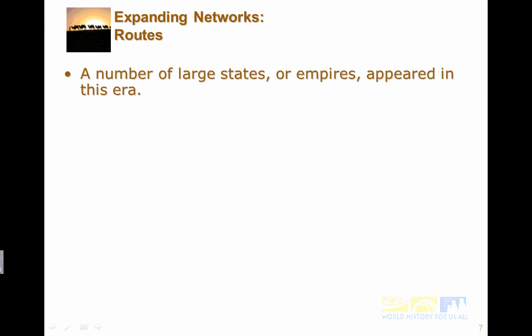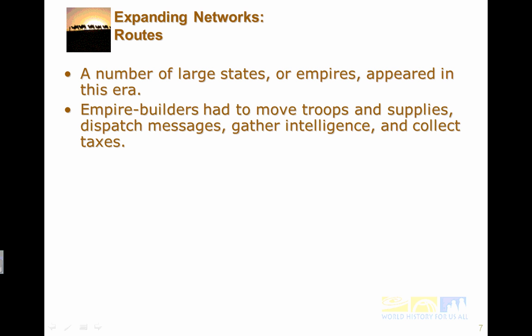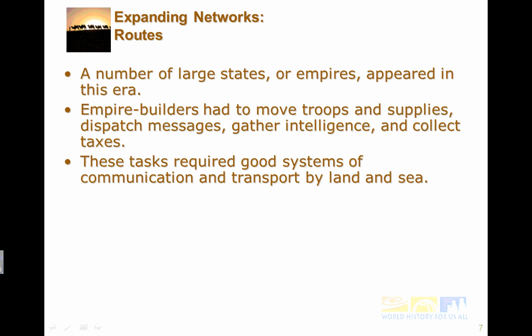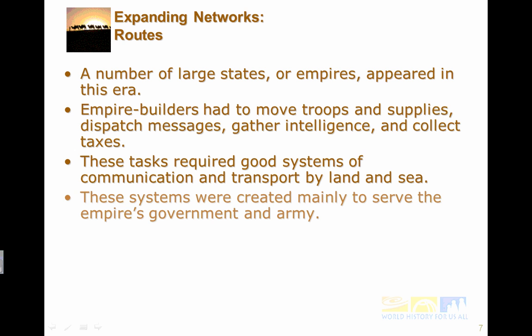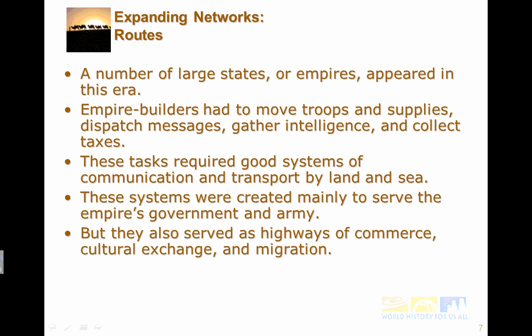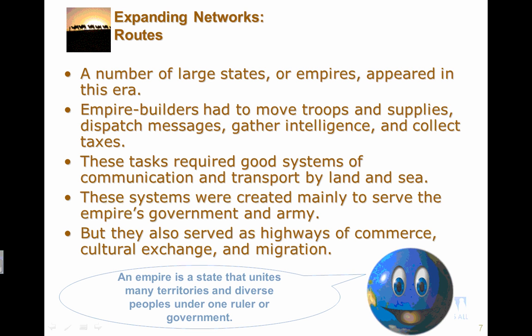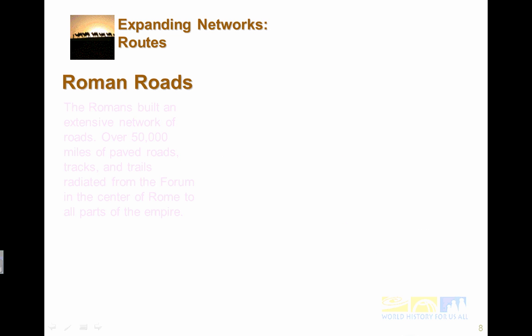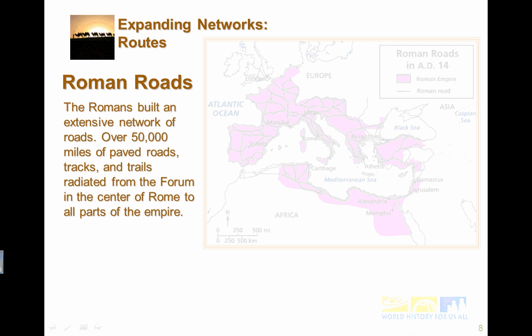A number of large states or empires appeared in this era. Empire builders had to move troops and supplies, dispatch messages, gather intelligence, and collect taxes over huge empires. These tasks required good systems of communication and transport by land and sea. These systems were created mainly to serve the empire's government and army, but they also served as highways of commerce, cultural exchange, and migration. An empire is a state that unites many territories and diverse peoples under one ruler or government.